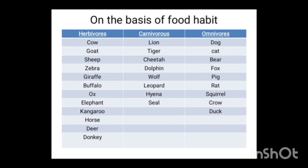Some examples: Herbivores — cow, goat, sheep, zebra, giraffe, buffalo, ox, elephant, kangaroo, horse, deer, donkey. Carnivores — lion, tiger, cheetah, dolphin, wolf, leopard, hyena, seal. Omnivores — dog, cat, bear, fox, pig, rat, squirrel, crow, duck, etc.